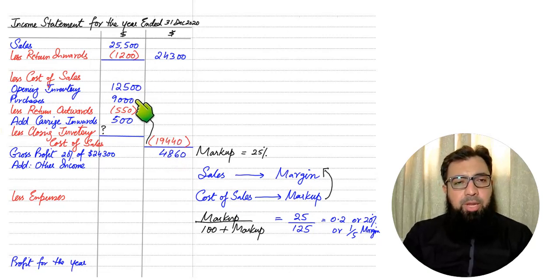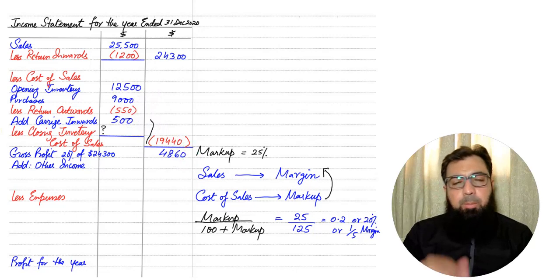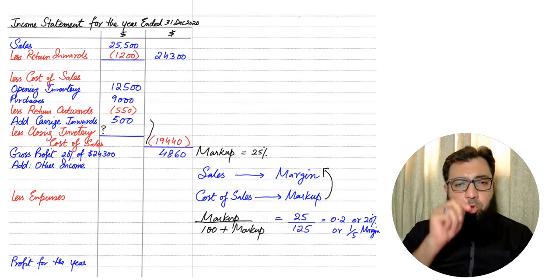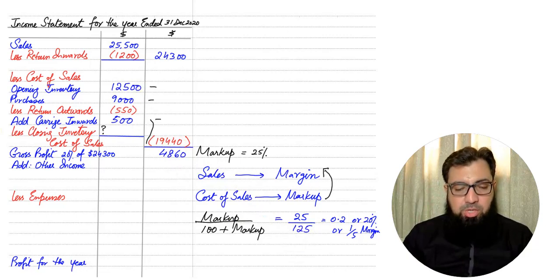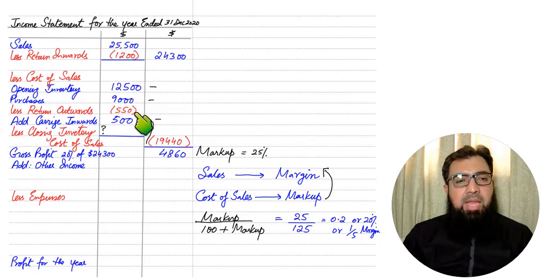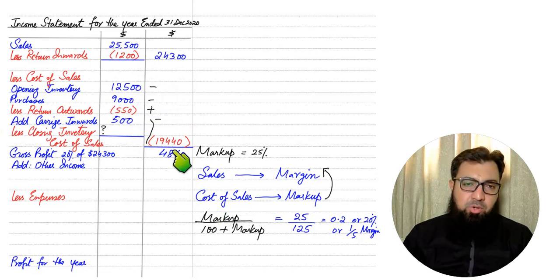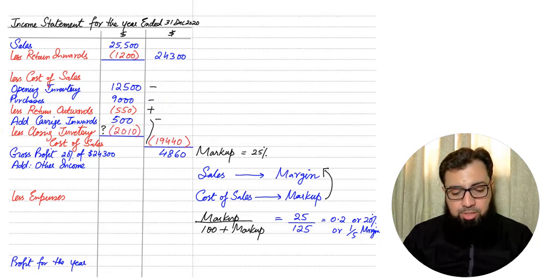Now we can calculate closing inventory using reverse working. Normally: opening inventory + purchases − return outward + carriage inward − closing inventory = cost of sales. Since we have already calculated cost of sales via markup/margin, we reverse the working: start with cost of sales and deduct items that were previously added — opening inventory, purchases, and carriage inward — then add back return outward. This gives us the closing inventory figure of 19,440 + 550 minus the other values.